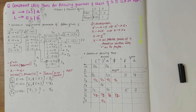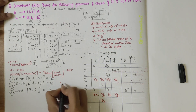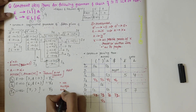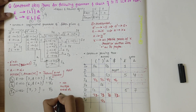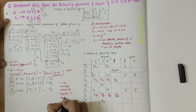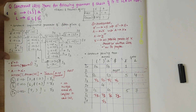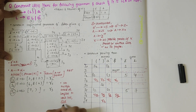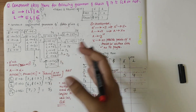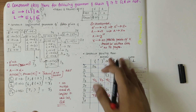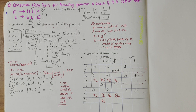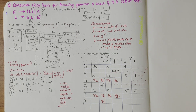Looking at the completed table, since there are no multiple entries or conflicts in each cell, I can say that the given grammar is SLR. I hope you have understood how to check if a given grammar is SLR or not by constructing the parsing table. If you have any doubts, do let me know in the comments and subscribe to my channel. Thank you.